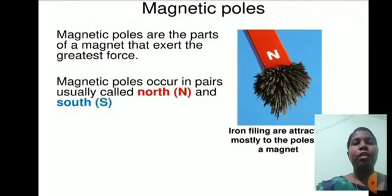Magnetic poles are parts of a magnet. They exert the greatest force. Magnetic poles occur in pairs, usually called north and south.